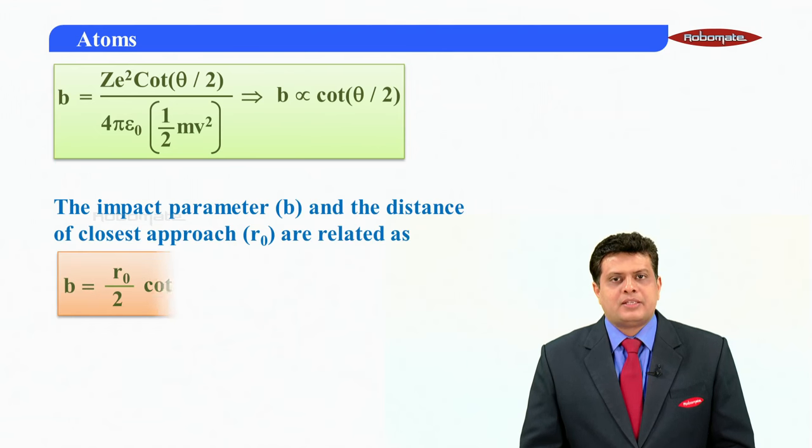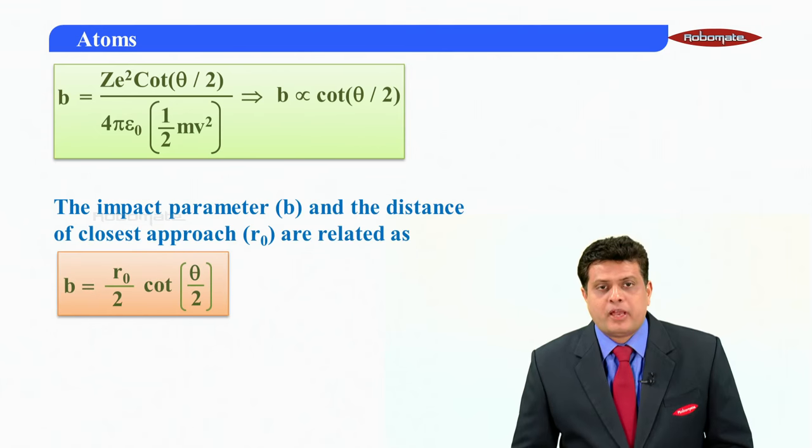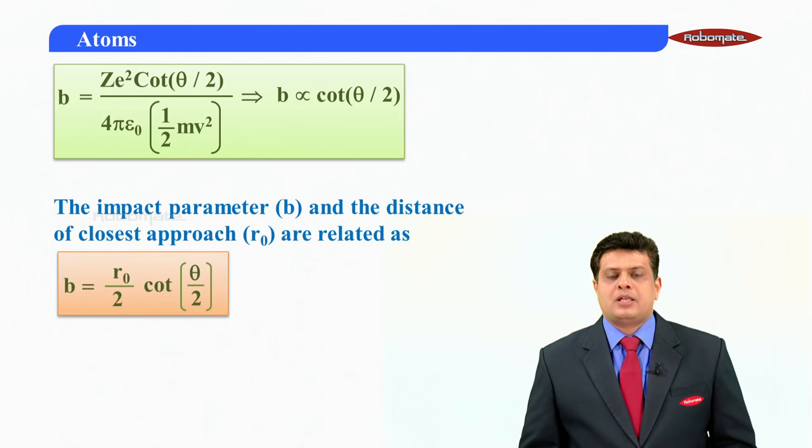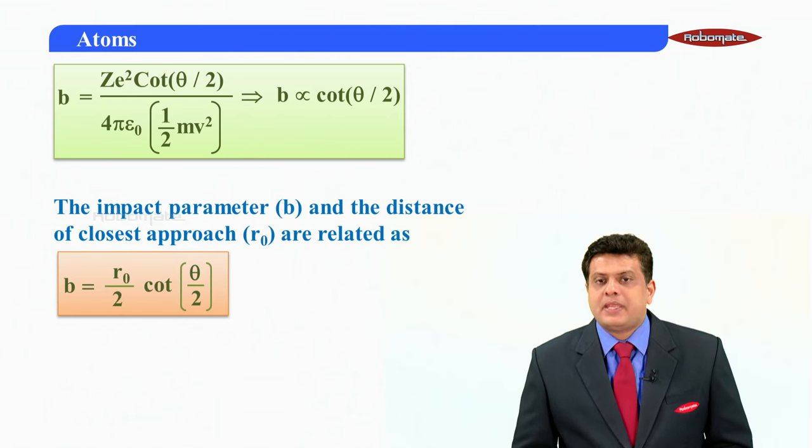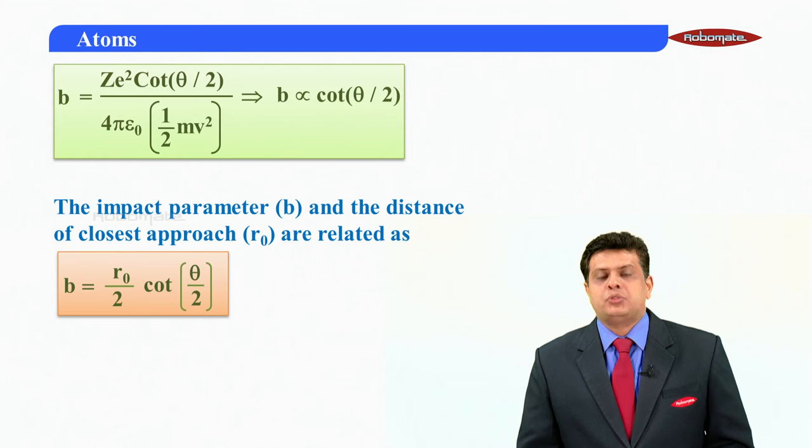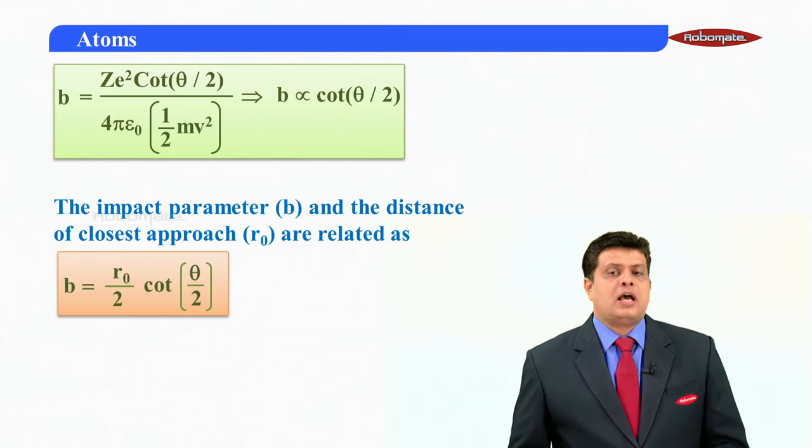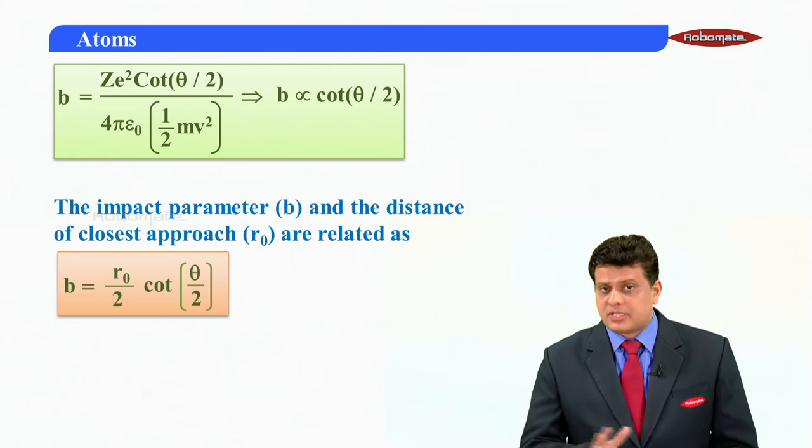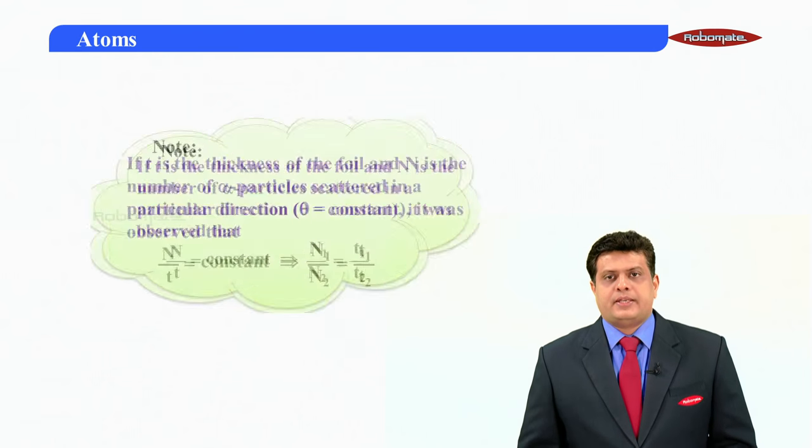The impact parameter B and the distance of closer approach R-naught are related as one of the very important formula. Impact parameter and distance of closer approach, they are related as B is equal to R-naught by 2 cot theta by 2. Don't forget this, R-naught by 2 cot theta by 2. Questions are there in the following modules on this.